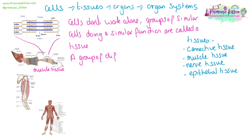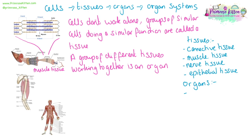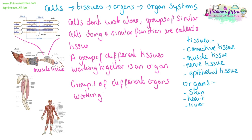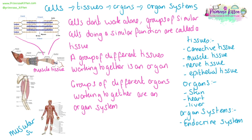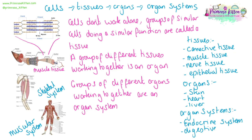A group of different tissues working together is an organ — there are lots of different types of organs, for example skin, heart, or liver. Groups of different organs working together towards a common goal are an organ system, such as the endocrine system, the muscular system, the skeletal system, or the digestive system.